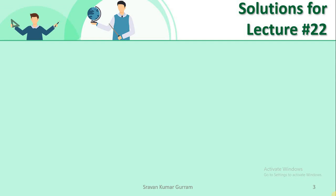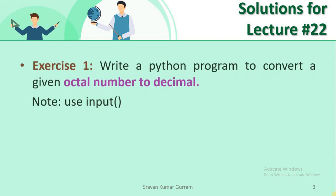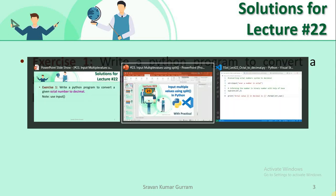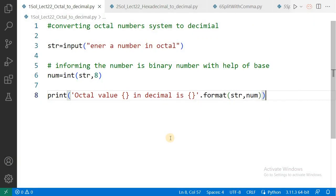In the last video I gave you exercises. Let us see the solutions for those exercises. Exercise one: write a Python program to convert a given octal number to a decimal number. The meaning of this exercise is you need to receive an octal number dynamically using the input function. Let us see the solution — the complete logic was covered in the last video.